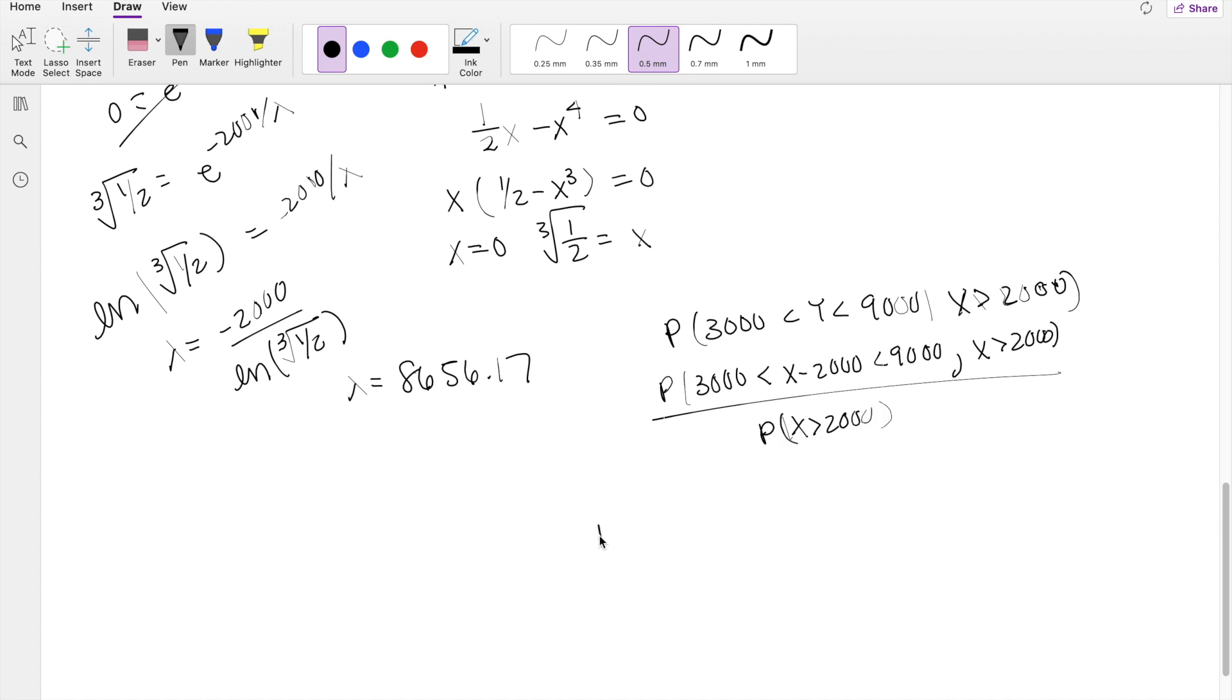So then solving for the top here, 3,000, adding 2,000 on both sides, you get 5,000 and 11,000. And X is greater than 2,000. But the thing is, if X is between 5,000 and 11,000, that's already bigger than 2,000. So that's kind of redundant here. So I'm just going to take that out, divided by the probability that X is greater than 2,000.